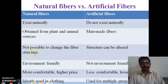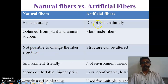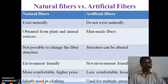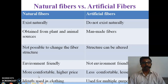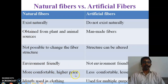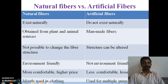Natural fibers are environment-friendly and eco-friendly, whereas artificial fibers are not eco-friendly. Natural fibers are more comfortable — for example, when we wear cotton clothes we feel comfortable — but the prices are higher. Artificial fibers are less comfortable but have lower prices compared to natural fibers.